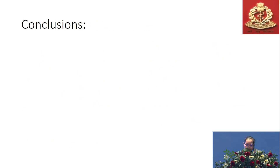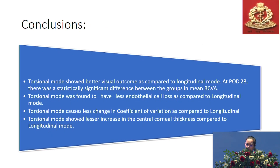In conclusion, the torsional mode showed better visual outcomes compared to the longitudinal mode. The torsional mode also demonstrated less endothelial cell loss, less change in coefficient of variance, and a lesser increase in central corneal thickness compared to the longitudinal mode. This data was statistically significant across all four parameters.